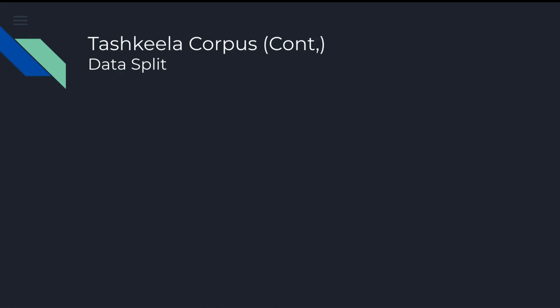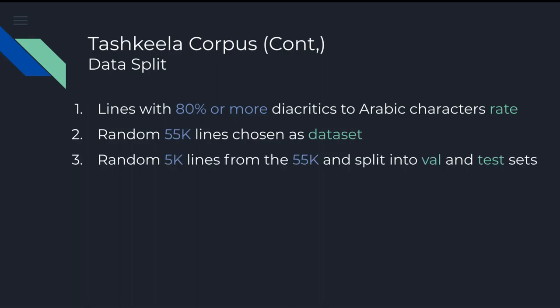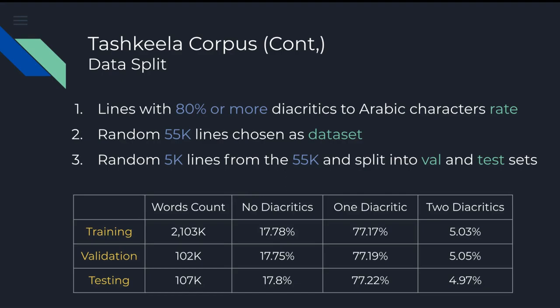We present our benchmark dataset extracted from the cleaned version of Tashkila after fixing its issues and adding the text of the Holy Quran. We extracted all the lines with a percentage of diacritized letters no less than 80%, so that the dataset is mostly diacritized. We randomly chose 55,000 lines for our dataset, 5,000 of which are randomly chosen and split into validation and testing sets. This results in a training dataset with about 2 million words, and validation and testing sets with a bit over 100,000 words. The letters with no diacritics in the whole dataset is close to 18%, the letters with 1 diacritic are about 77%, and the letters with 2 diacritics are close to 5%.